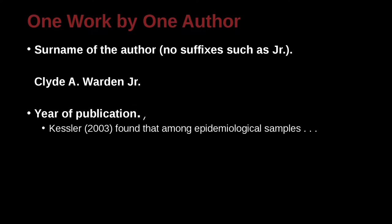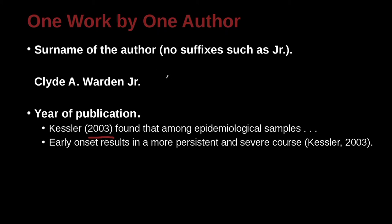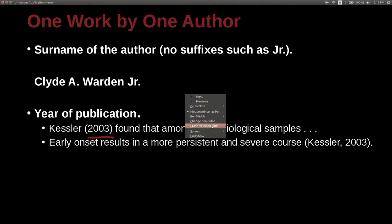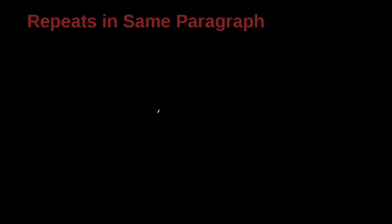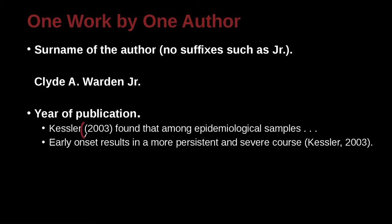Year of publication is the next key point. Here's an example with Kessler — the author's family name — and 2003, the year of publication. For example: 'Kessler found that among epidemiological samples something, 2003' or 'Early onset results in a more persistent and severe course. (Kessler, 2003).' Both of these are parenthetical — that is, they both use parentheses. In the first, parentheses are used just for the date; in the second, for both the name and the date. Both ways are possible.